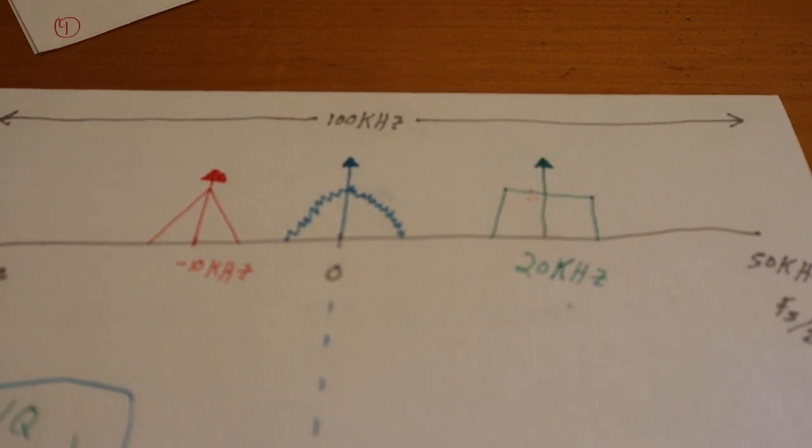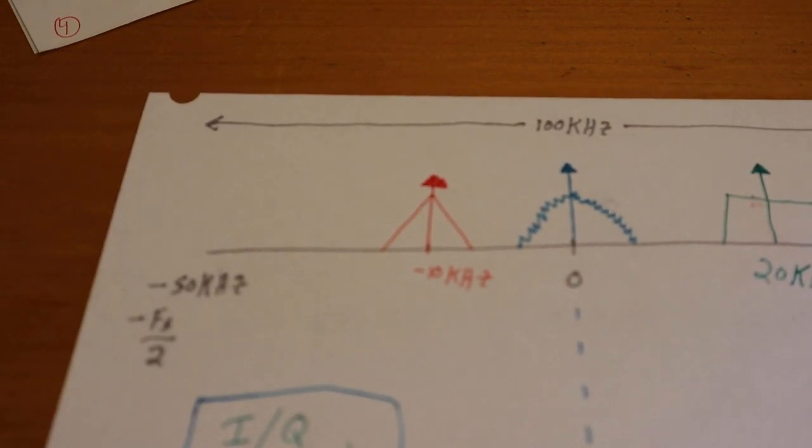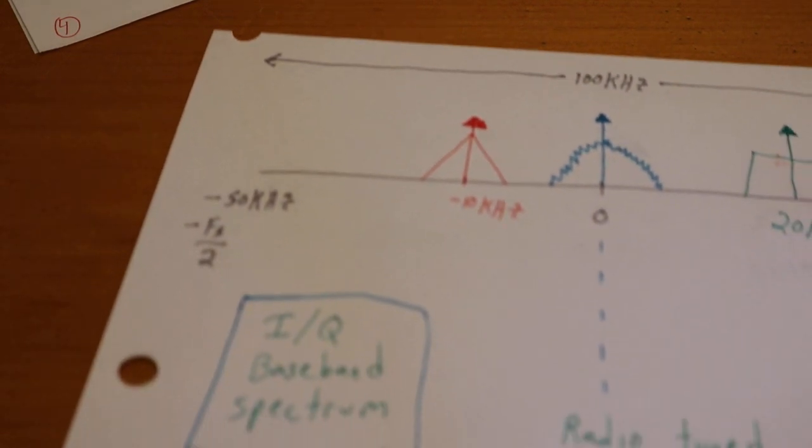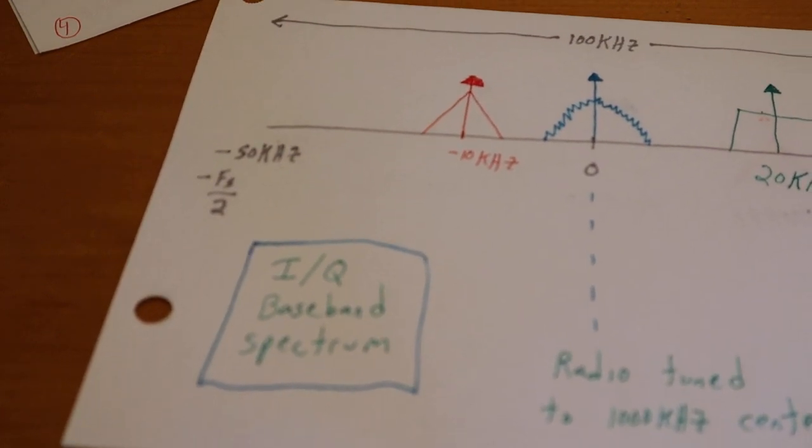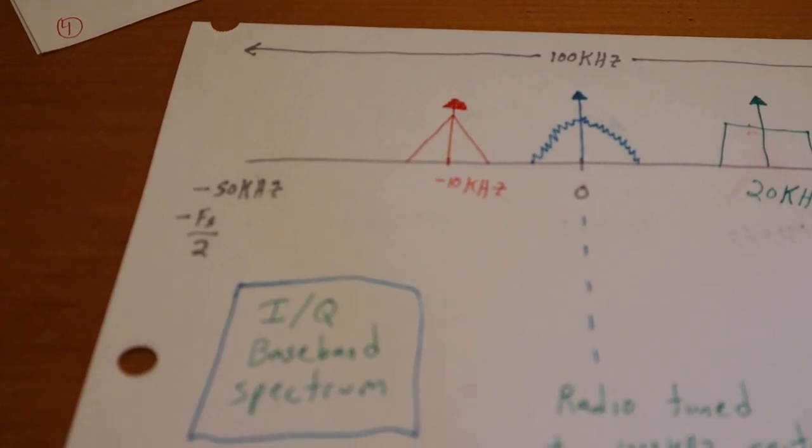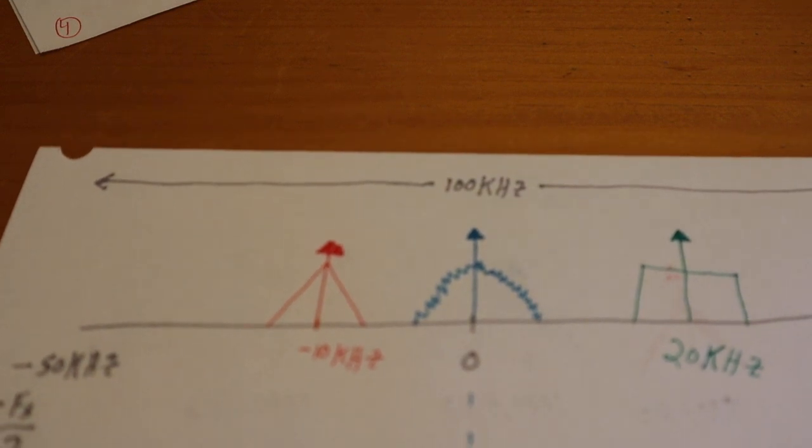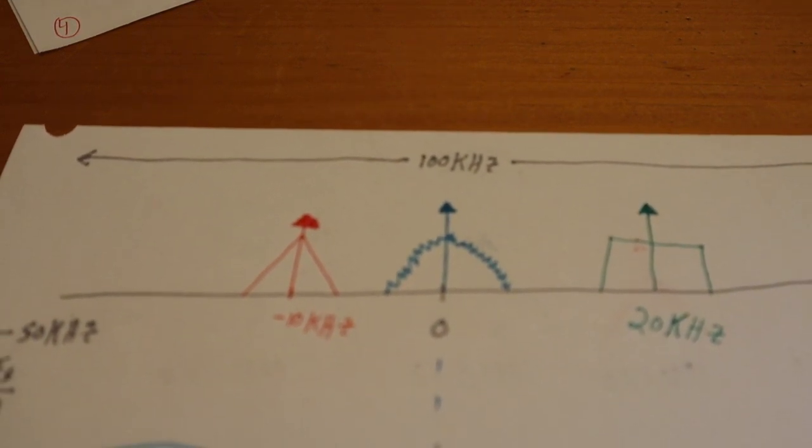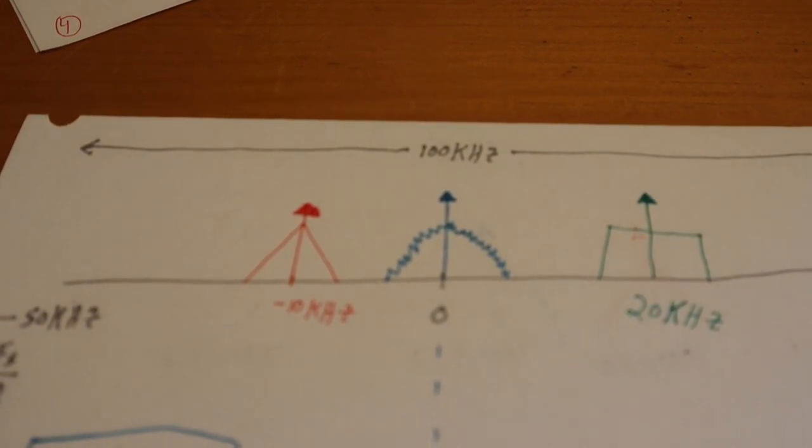The other station's at 20 kilohertz because it's 1020 minus 1000, and the other guy's at minus 10 kilohertz because it's 990 minus 1000. So this all here is what's called baseband spectrum.